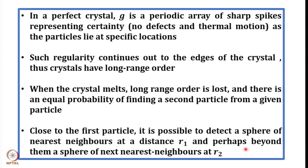You have to define the function in such a way that you can talk about the probability of finding the molecule. The radial distribution function is defined such that G(r) times r-squared times dr is the probability that a molecule will be found in the range dr at a distance r from the other particle. So now we have started talking about the probability of finding the molecule in a small range at a distance r from the other particle. Once again we can start with the crystal — in a perfect crystal, G is a periodic array of sharp spikes. Why sharp spikes? Because their coordinates are fixed and there is certainty — if there is no defect and no thermal motion, then you can have certainty.